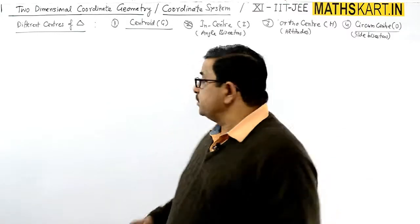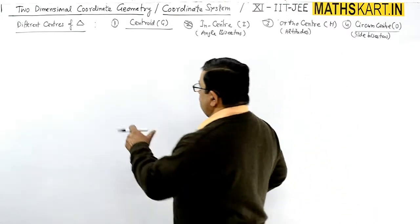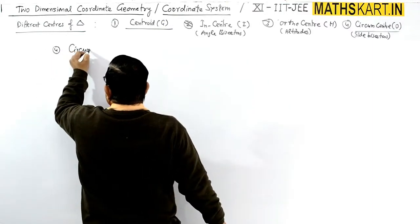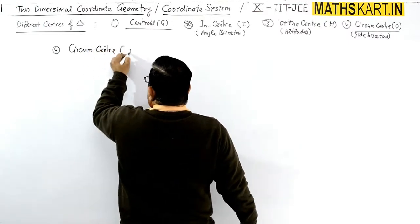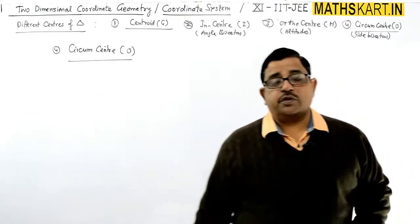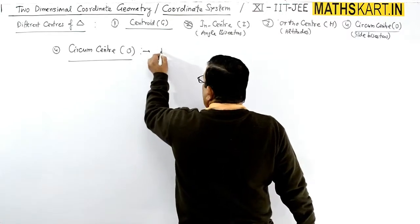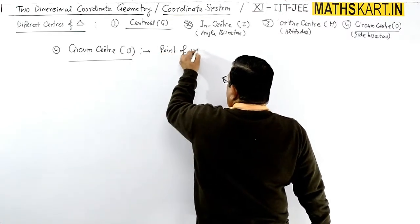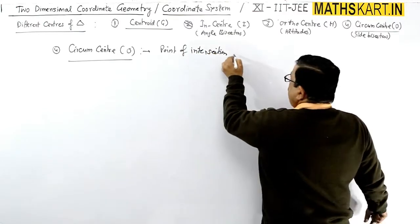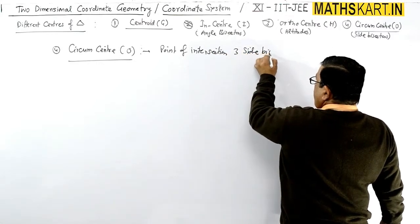See, next force center, that is the circumcenter of any triangle. Circumcenter is normally given by O. Capital O letter is used for the circumcenter, and it is the point of intersection of three side bisectors.